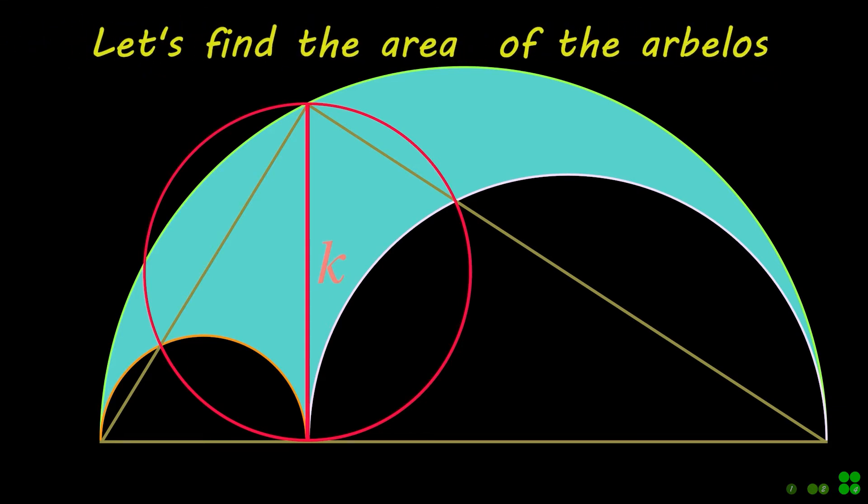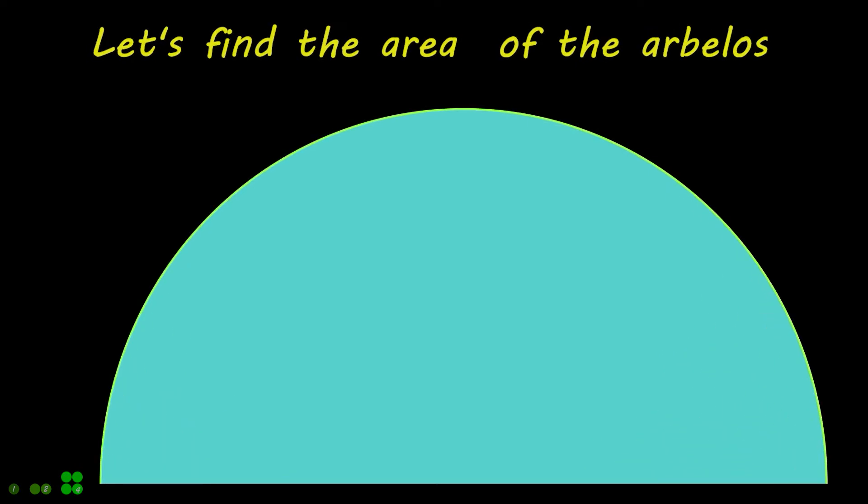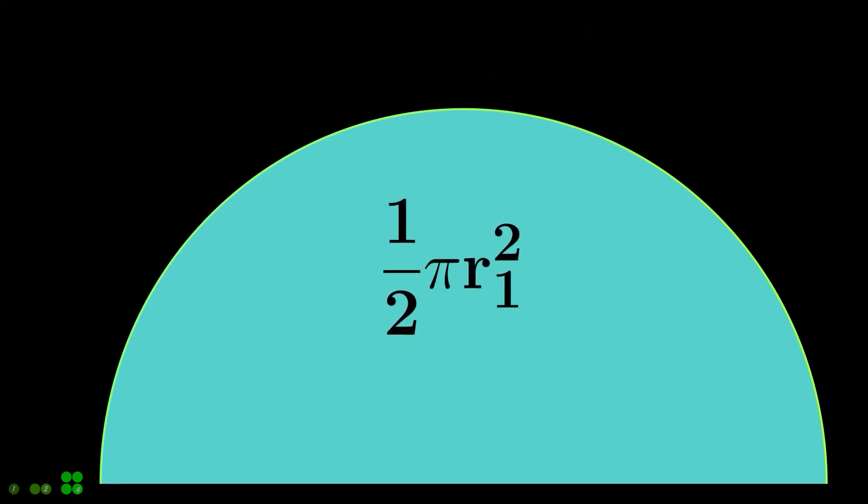Let's find the area of the Arbelos. Since area of a circle is pi times radius squared, therefore area of the semicircle is half of that.